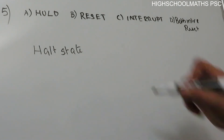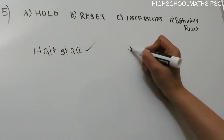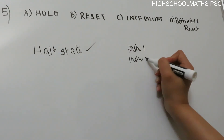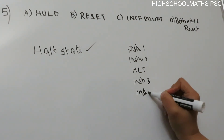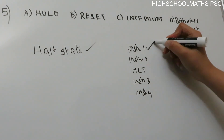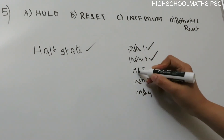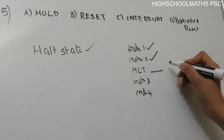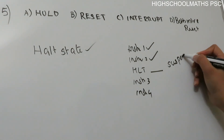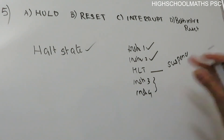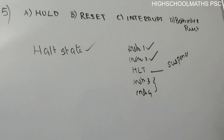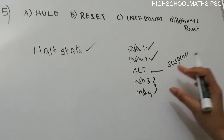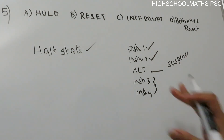We need to understand the HALT state. In a sequence: instruction 1, instruction 2, then the HLT instruction, then instruction 3, instruction 4. When we execute the HLT instruction, the operation is suspended. The microprocessor suspends operation and waits. To resume, we need either a RESET pin or an interrupt. The HOLD signal is for something different — it is related to bus arbitration, not exiting HALT state.